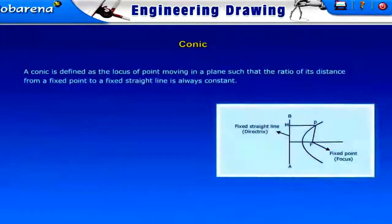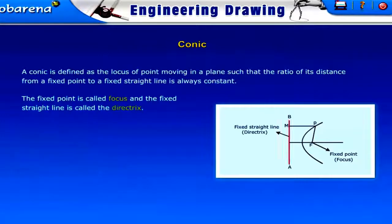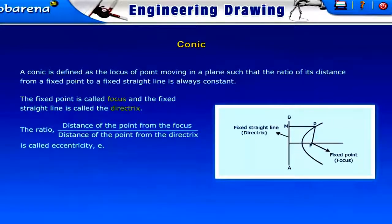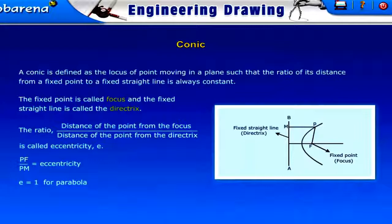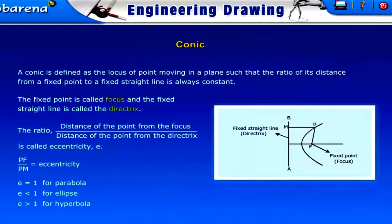A conic is defined as a locus of a point moving in a plane such that the ratio of its distance from a fixed point to a fixed straight line is always constant. The fixed point is called the focus and the fixed straight line is called the directrix. The ratio PF divided by PM is called eccentricity E. E equals 1 for parabola, E is less than 1 for ellipse, and E is greater than 1 for hyperbola.